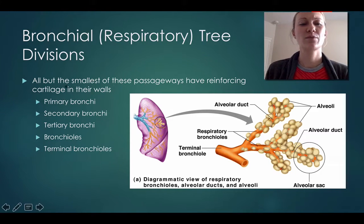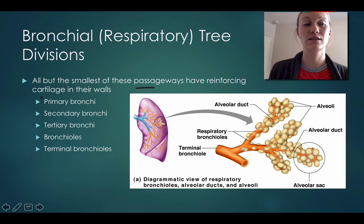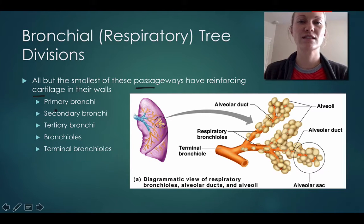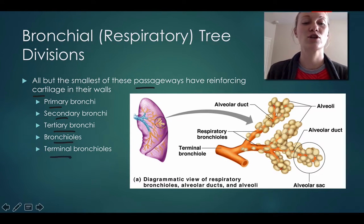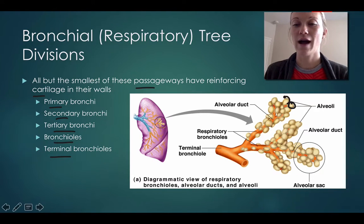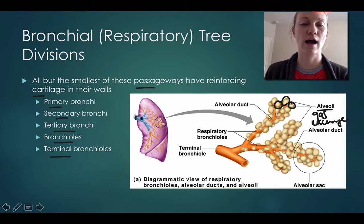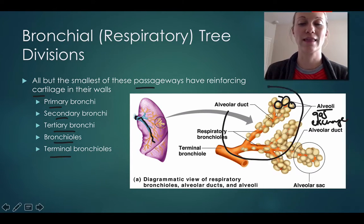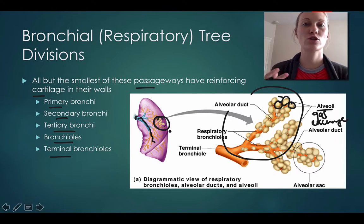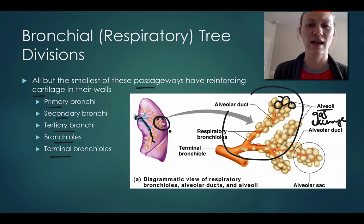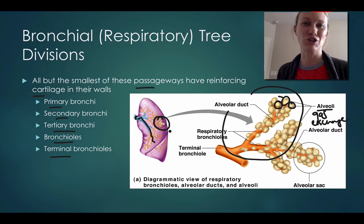The respiratory tree divisions are basically the smallest passageways that have reinforced cartilage in their walls. You have the primary bronchi, the secondary bronchi, the tertiary bronchi, the bronchioles, and then the terminal bronchioles. The alveoli are where the actual gas exchange occurs. In order for oxygen to get there, it has to go through a bunch of different branches — starting with the bronchi, going primary, then secondary, then tertiary, then bronchioles, getting smaller and smaller. The oxygen has to travel a pretty great distance in order to get into your lungs.